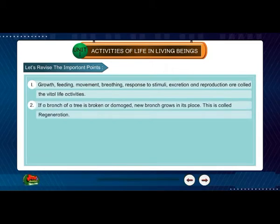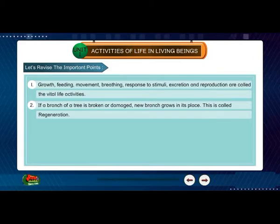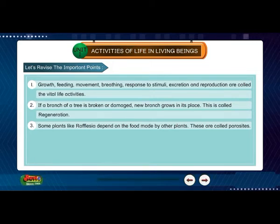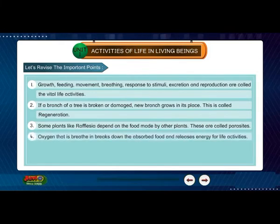If a branch of a tree is broken or damaged, a new branch grows in its place. This is called regeneration. Some plants like Rafflesia depend on the food made by other plants. These are called parasites.